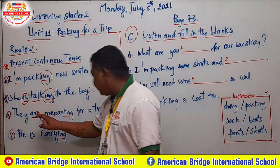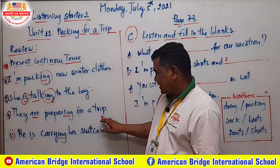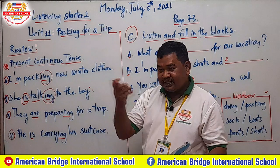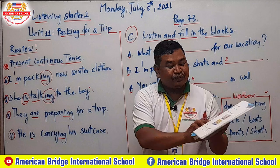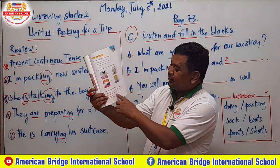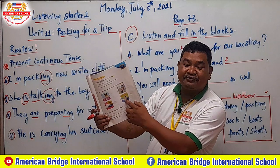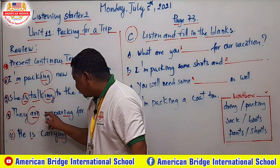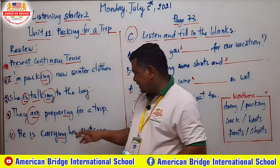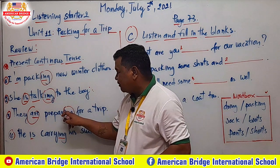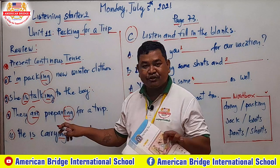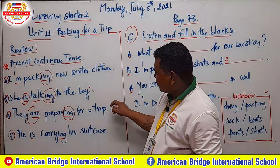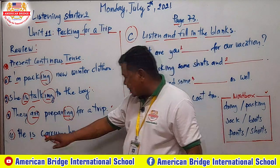Next example: 'They are preparing for a trip.' 'They' means a group — one boy and one girl together. The base word is 'prepare,' and when we add -ing, you have to omit the 'e.' So it becomes 'preparing.' They are preparing for a trip.